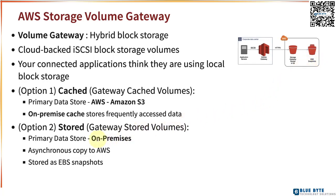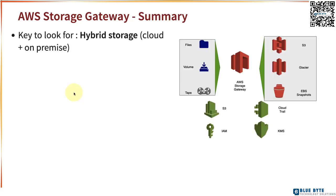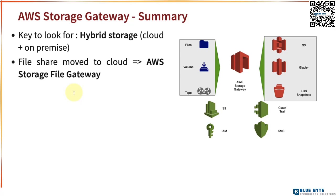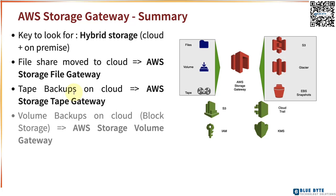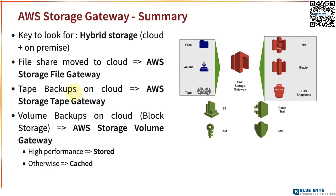If you want high performance, store all data on-premises — that's the stored option. If you're okay with good performance, go with cached. To summarize: AWS Storage Gateway is about hybrid storage. For file shares you want to move to the cloud, use File Gateway. For tape backups stored on the cloud, use Tape Gateway. For block storage volume backups on the cloud, use Volume Gateway — stored for high performance, cached otherwise.